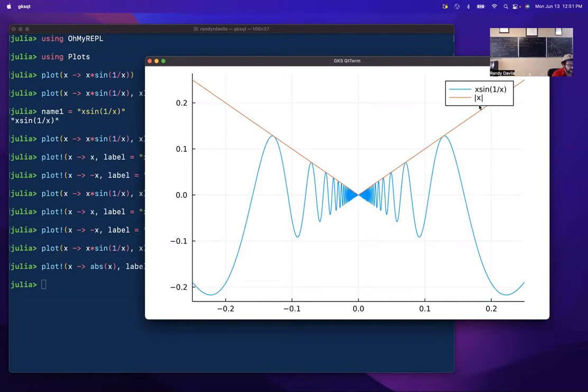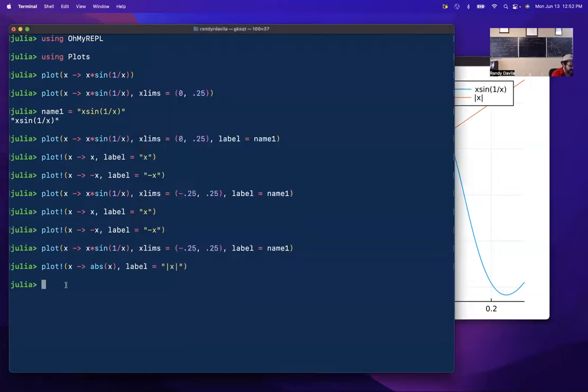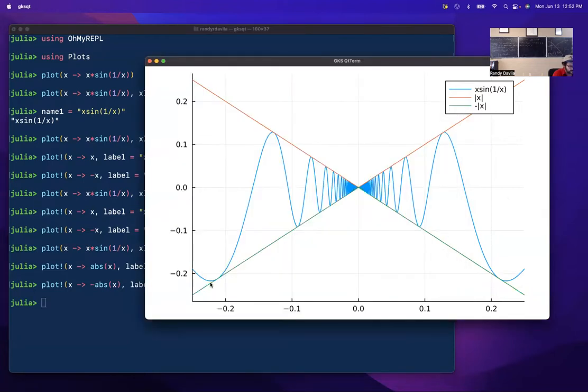But the hint is we have something. It looks like if we flip it upside down, we can get a function that bounds it from below. So how do you flip a function upside down? Here's our parent function shown in red and we want to flip it upside down. You multiply it by negative one. So let's plot now on top of that figure, negative absolute value of x. There's negative absolute value. Bounds it from below. You see that?